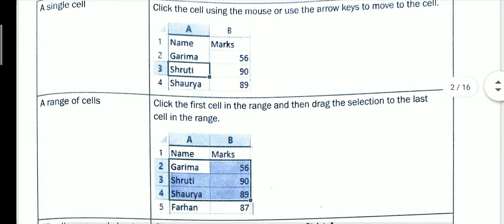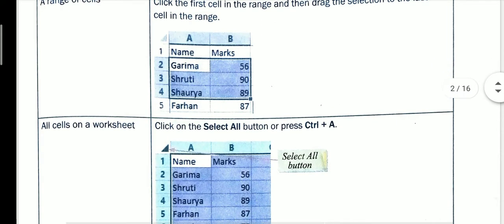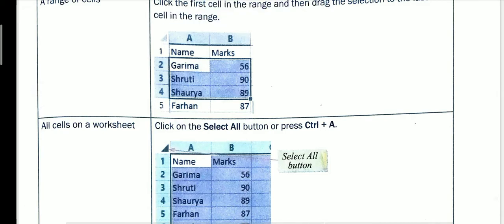The next method is to select a range of cells. Click the first cell in the range, then drag the selection to the last cell in the range. As you can see, A2 is the starting cell — drag from A2 to B4 to select that range.